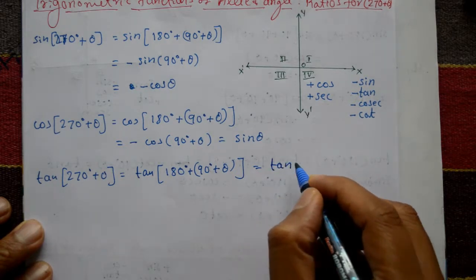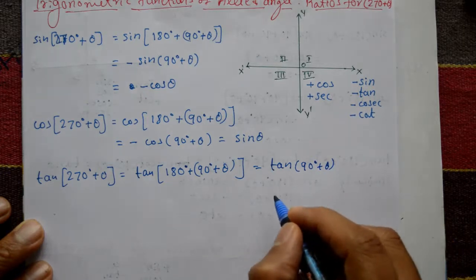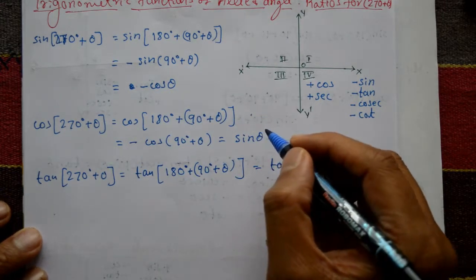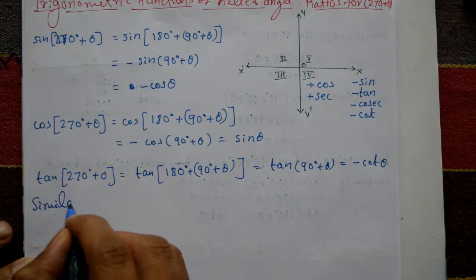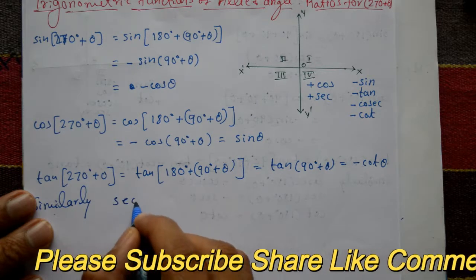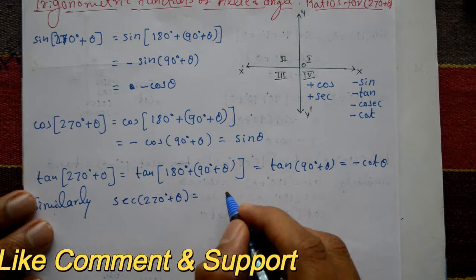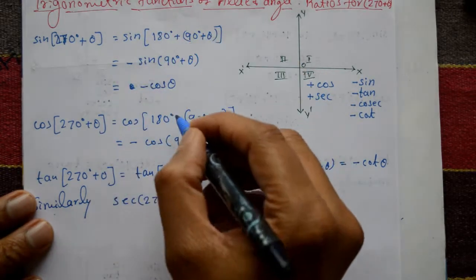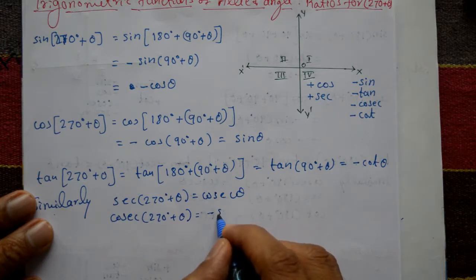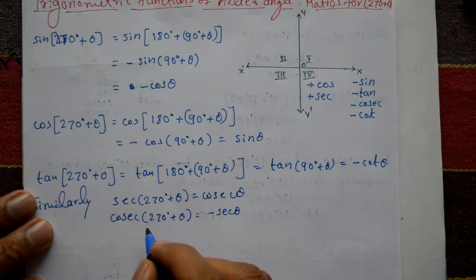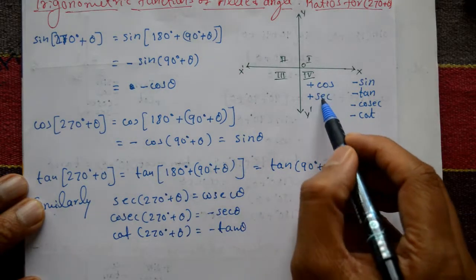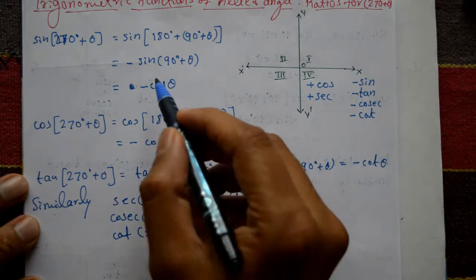For tan of 270 degrees plus theta, theta means 90 degrees plus theta, and tan of 90 plus theta equals minus cot theta. Please check the previous videos for these ratios. Similarly, secant of 270 degrees plus theta equals cosec theta, cosec of 270 degrees plus theta equals minus secant theta, and cot of 270 degrees plus theta equals minus tan theta. So cos and secant are positive ratios in the fourth quadrant, and the remaining ratios are negative.